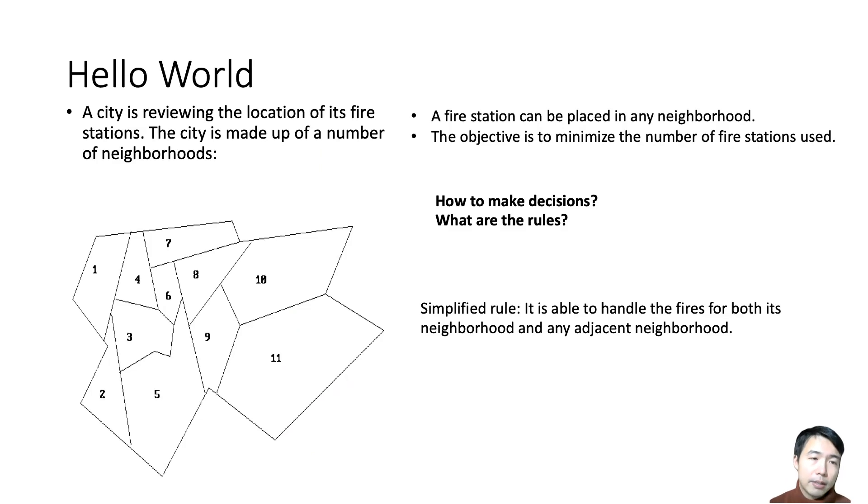Here is a Hello World example of math modeling. For example, a city is reviewing the location of its fire stations. The city is made up of a number of neighborhoods, 1 to 11, and these are the boundaries of each neighborhood. A fire station can be placed in any neighborhood, and the objective is to minimize the number of fire stations used.